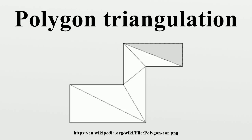One way to triangulate a simple polygon is based on the two-ear theorem: any simple polygon with at least four vertices without holes has at least two ears, which are triangles with two sides being the edges of the polygon and the third one completely inside it. The algorithm consists of finding such an ear, removing it from the polygon, and repeating until there is only one triangle left. This algorithm is easy to implement, but slower than some other algorithms, and it only works on polygons without holes.